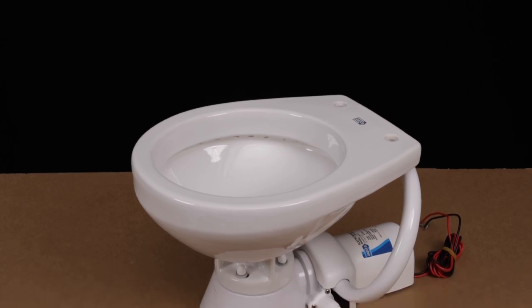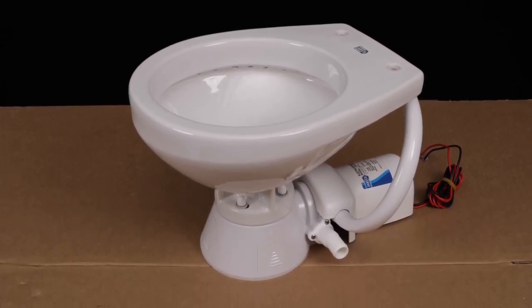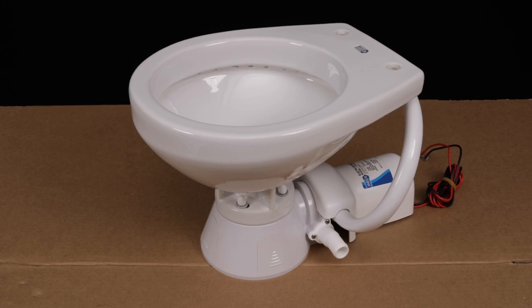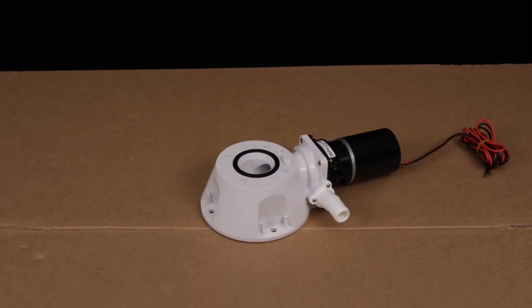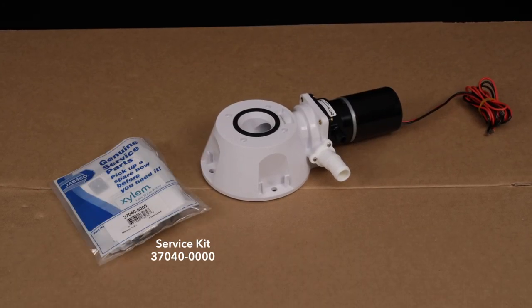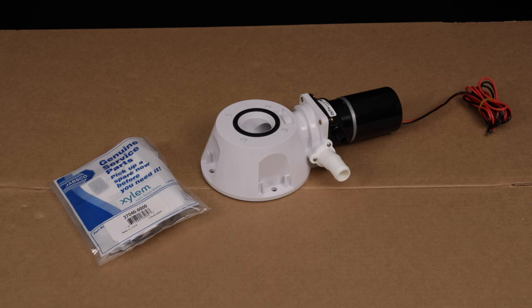As a result of normal operation, eventually you may experience reduced in or outflow with your JAVSCO 37010 electric flush pump system, or perhaps some leakage from underneath the pump assembly. In most cases, implementing the Pump Service Kit, which is part number 37040-0000, will solve these problems, and in this video we'll show you how to do so.